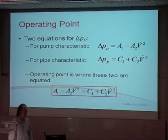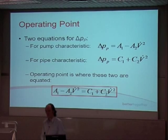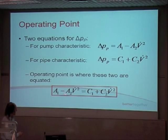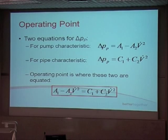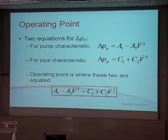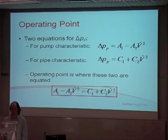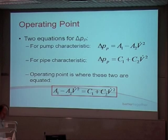So we have: A1 minus A2·V̇² equals C1 plus C2·V̇². Generally with this system you'll be given the pump characteristic, so you'll know what A1 and A2 are. You'll generally have to calculate C1 and C2 — that's basic pipe dynamics, of which you've done multiple examples. It's all about finding those values, and we'll go through an example.